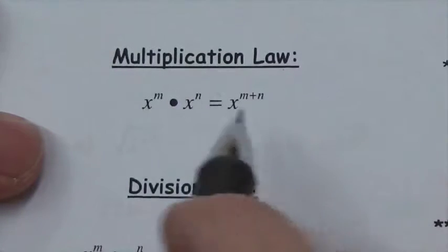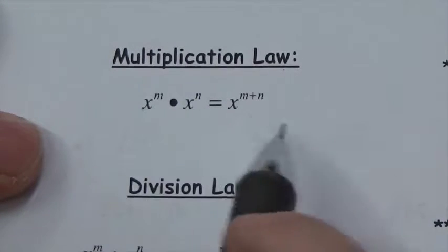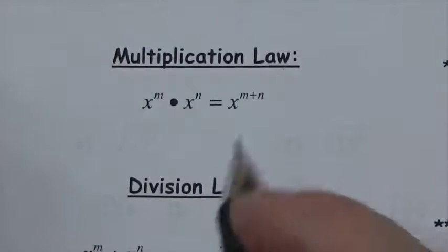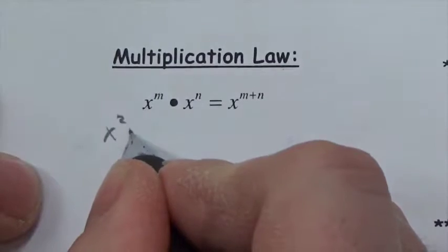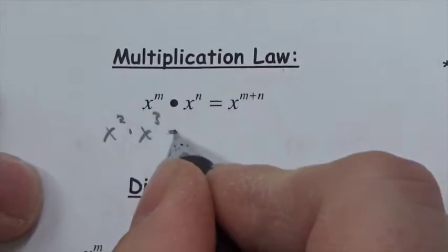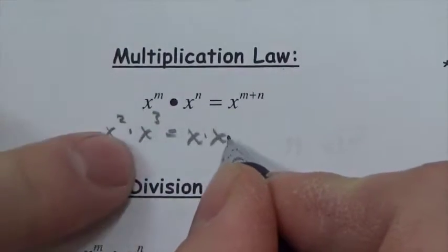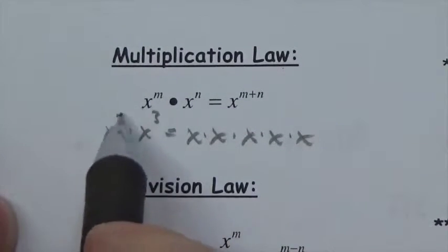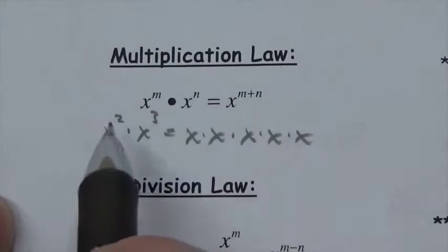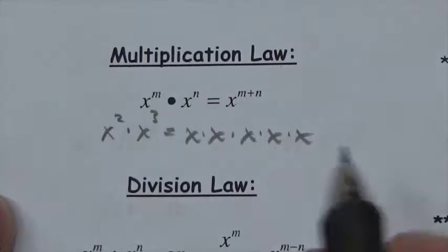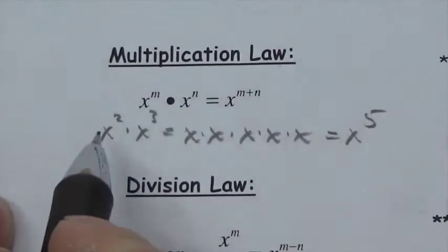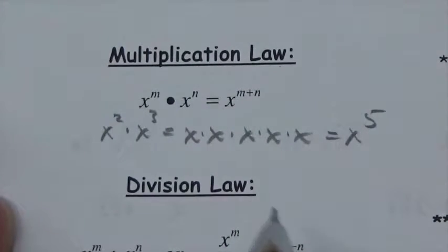First, we'll start with the multiplication law. If you've got two powers multiplied together and they have the same base, you simply add the exponents together. Let's say we had x squared times x cubed — that's x times x multiplied by x times x times x. The exponent tells you how many times that base is a factor. When you put those together you've got five factors, so that's x to the fifth. That's really just the sum of those two.